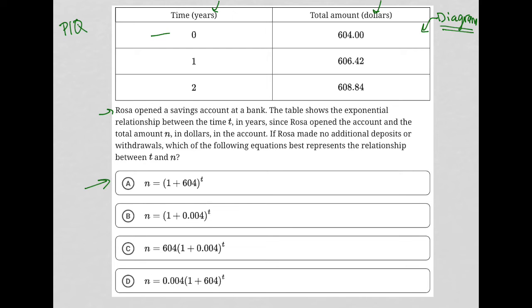So let's start here. I know that when T is equal to zero, because time is zero, so zero equals T, I should have N, which is the total amount of money, equal to 604. Where does that happen?